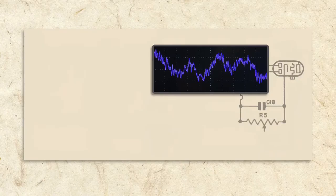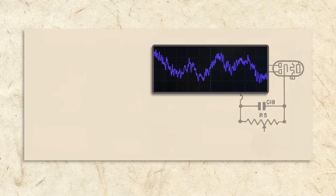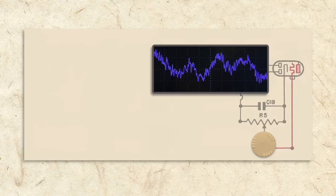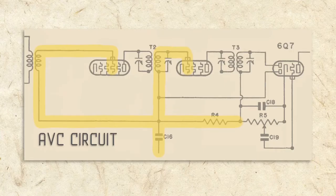The remaining audio signal is sent to the volume control R5, which adjusts its strength and passes it to the grid of the detector tube, where it is amplified and sent to the next tube.